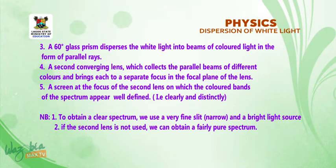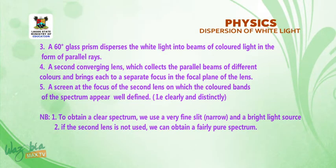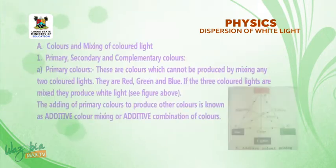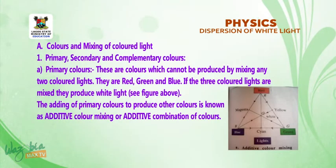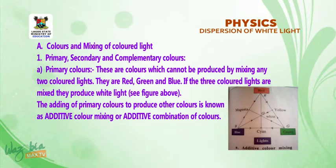Also, if the second lens is not used, you will only obtain a fairly pure spectrum. Now let's look at colors and mixing of colored light. We're going to start with primary, secondary, and complementary colors.